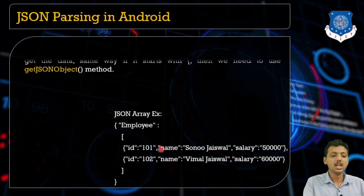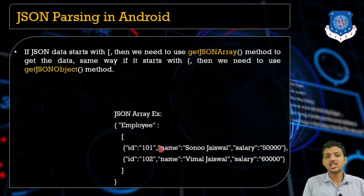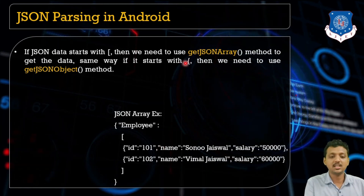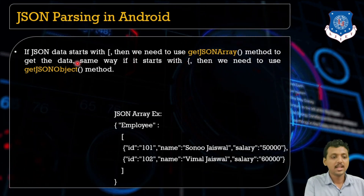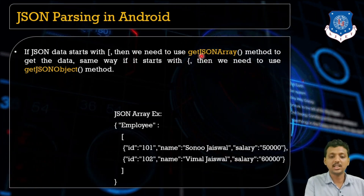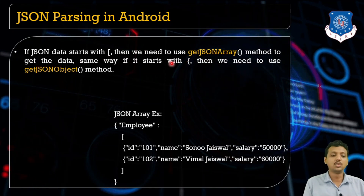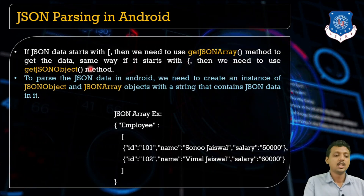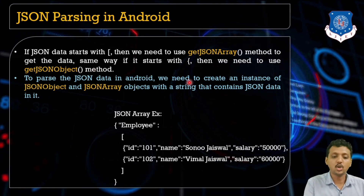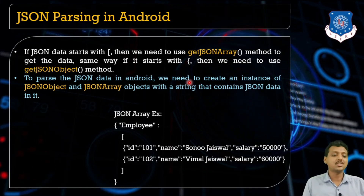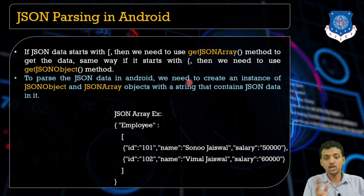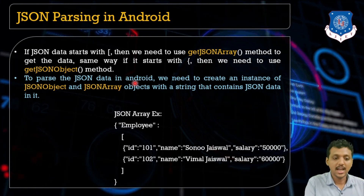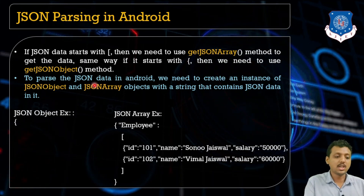We need to call the appropriate data depending on whether it is an array or an object. If the JSON data starts with a square bracket, we access it using the getJSONArray method. If it starts with a curly bracket, we use the JSONObject method. To parse JSON data in Android, we need to create an instance of JSONObject or JSONArray accordingly.